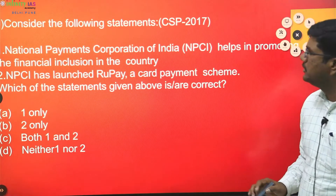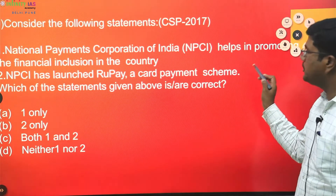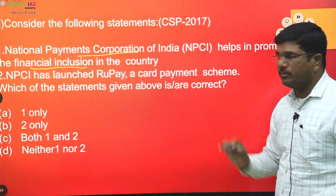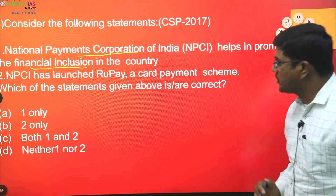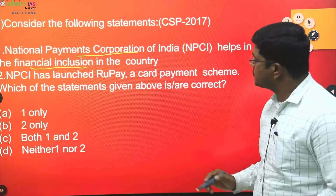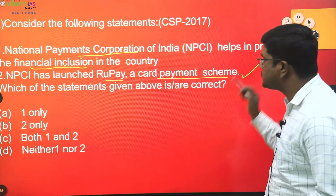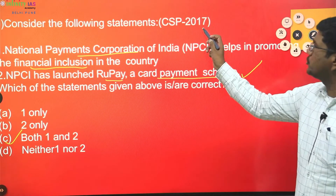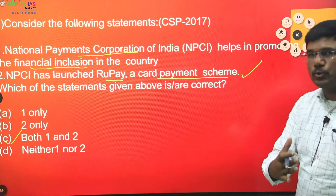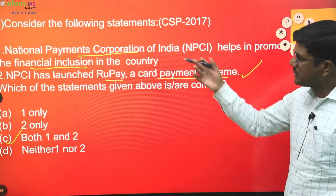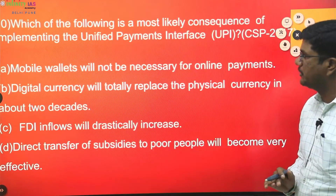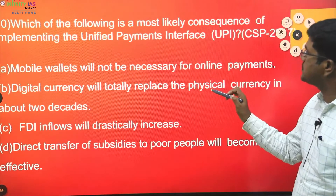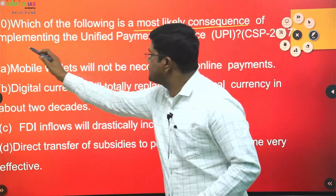Consider the following statements about the National Payments Corporation of India (NPCI): statement one — NPCI helps in promoting financial inclusion — yes, the major purpose of NPCI is boosting financial inclusion. Statement two — NPCI has launched RuPay card, a credit card payment scheme — that is also correct. Both statements are correct. This was asked in 2017 in the aftermath of demonetization.